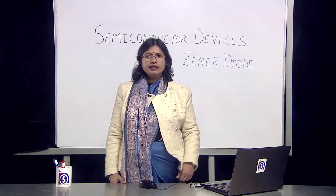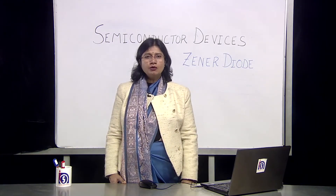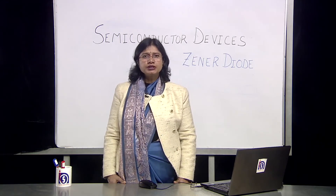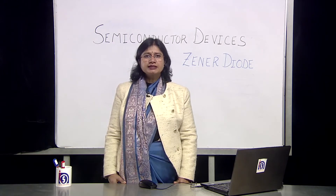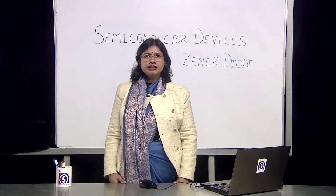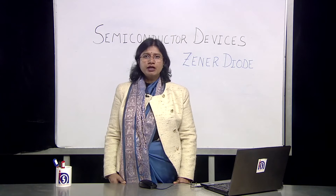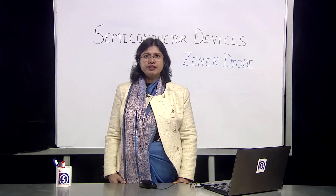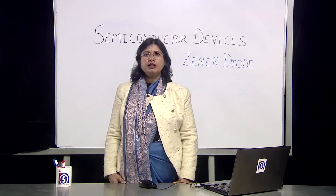A Zener diode is typically a normal diode, except that it is always used in reverse bias. The limitation of rectifiers is that the output is not very stable. This Zener diode provides a very stable voltage — you can draw a large amount of current from it without any voltage fluctuations. So compared to rectifiers, a Zener diode is a much better voltage regulator, giving us a regulated power supply.